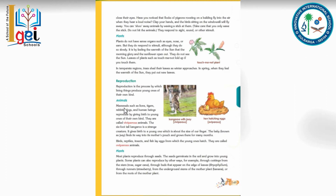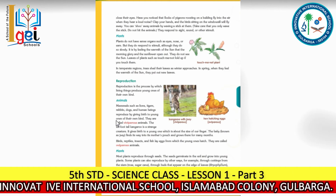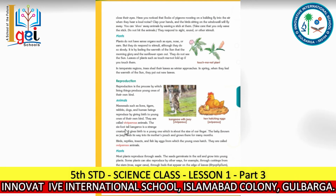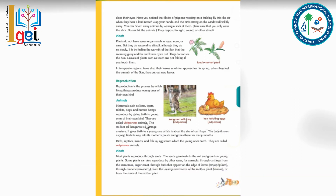For example, the kangaroo with its joey hatching from eggs. Mammals such as lion, tiger, rabbit, dogs, and human beings are also called mammals, which can reproduce by giving birth to young ones of their own kind. They are called viviparous animals.